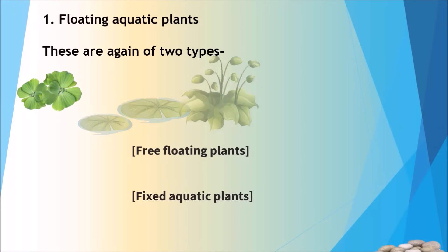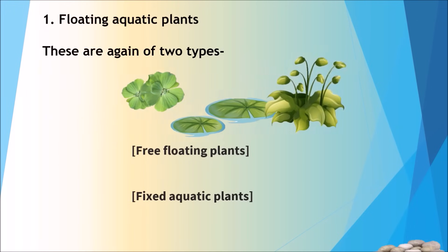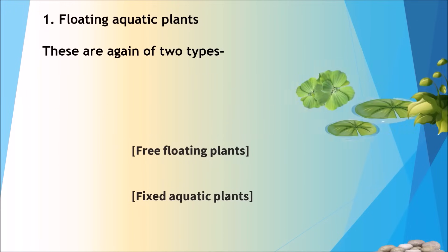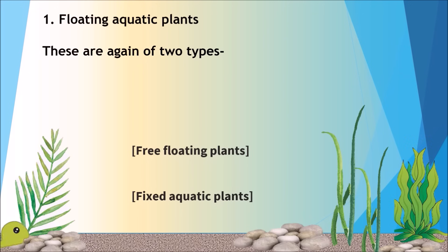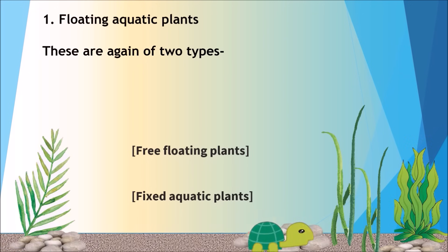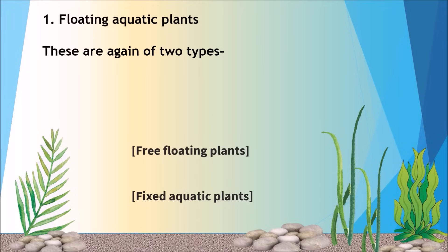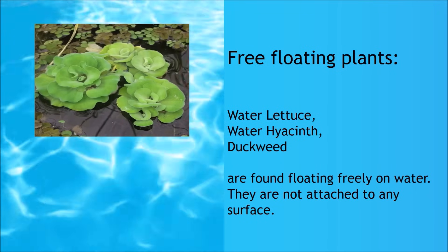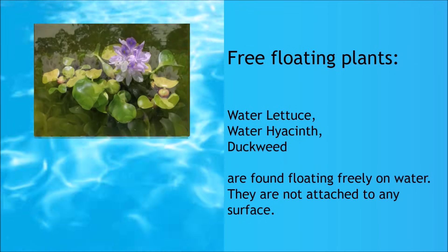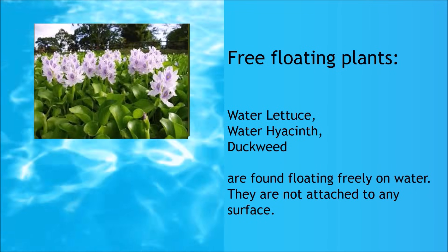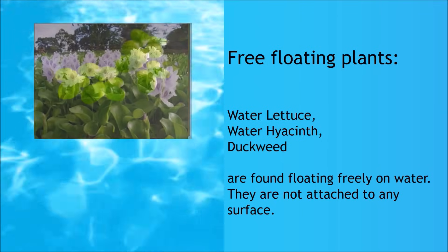Floating aquatic plants are again of two types: Free Floating Plants and Fixed Aquatic Plants. Water Lettuce, Water Hyacinth and Duckweed are found floating freely on water.